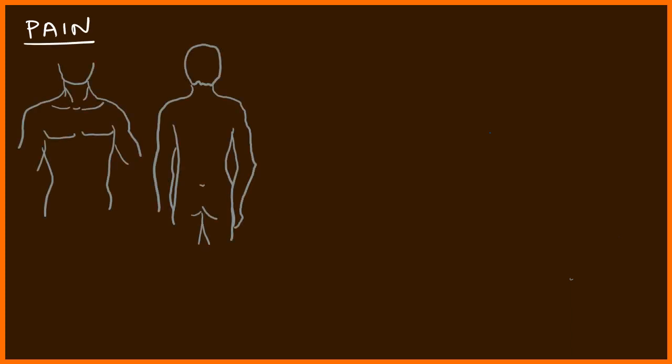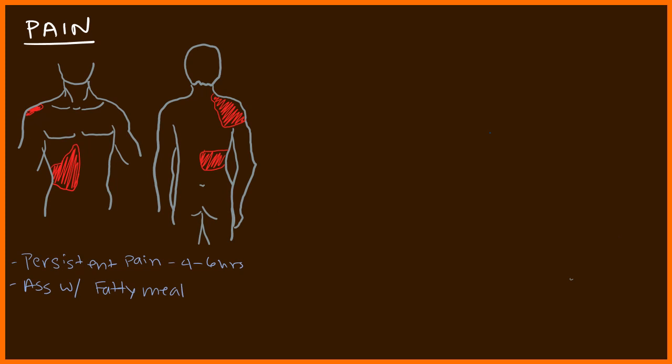The primary symptom of cholecystitis is pain. The typical pain is in the right upper quadrant and extends up to the midline. It can also cause retrosternal chest pain, so cholecystitis belongs on the differential for chest pain. The pain can radiate to the back and refers to the upper right shoulder, extending to the scapula and between the shoulder blades. The pain is fairly persistent, lasting four to six hours, typically associated with fatty meals — patients will say eating a burger triggers their symptoms.